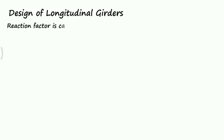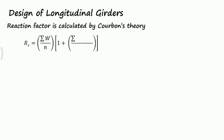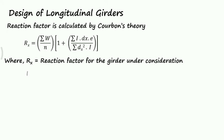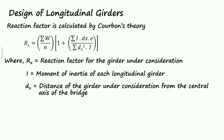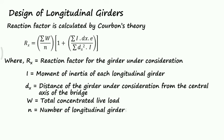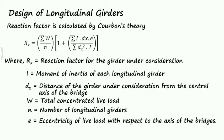The reaction factor is calculated from the following equation as per Corbin's theory: Rx = (ΣW / N) × (1 + (Σ I × dx × E) / (Σ dx² × I)), where Rx is the reaction factor for the girder under consideration; I is the moment of inertia of each longitudinal girder; dx is the distance of the girder under consideration from the central axis of the bridge; W is the total concentrated live load; N is the number of longitudinal girders; and E is the eccentricity of the live load with respect to the axis of the bridge.